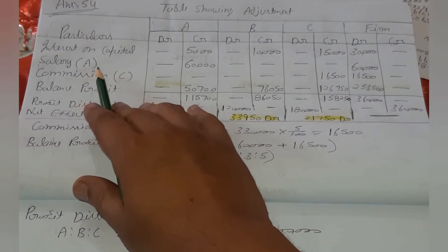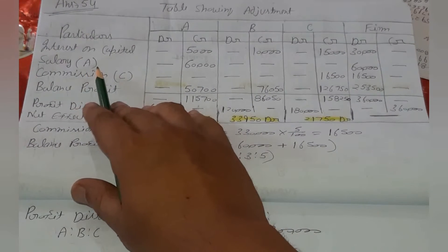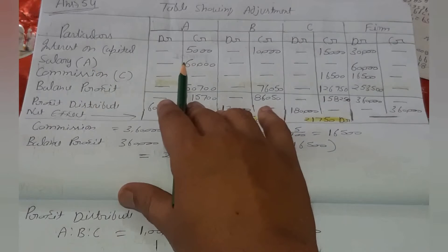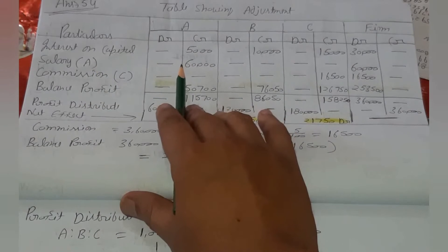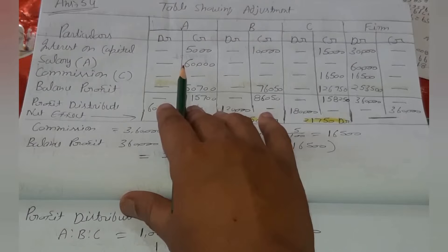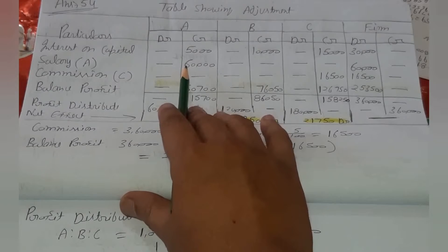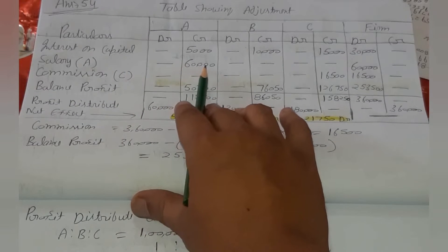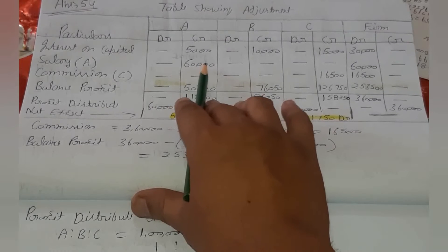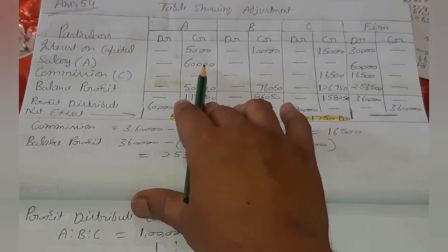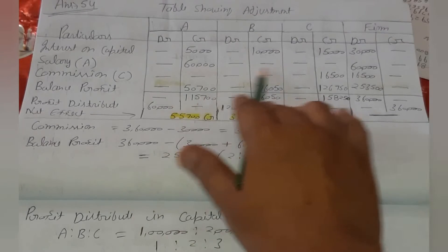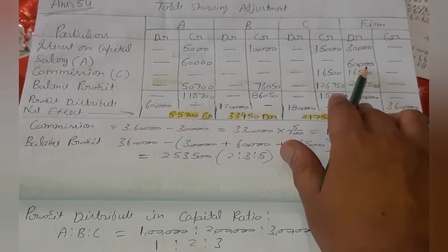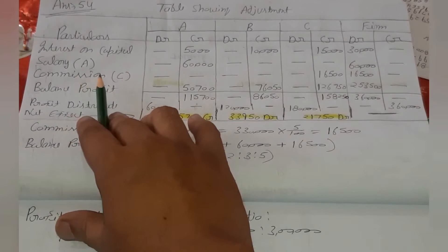दूसरा point है salary. A को salary दी गई है 60,000 रुपए, यानी A की salary 5,000 per month के according 12 महीने में 60,000 आता है, जो A के लिए credit होगा और firm में debit होगा क्योंकि firm के लिए expenses है।